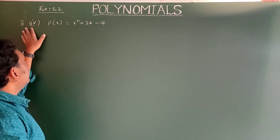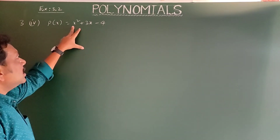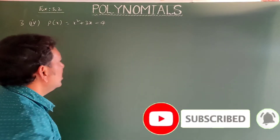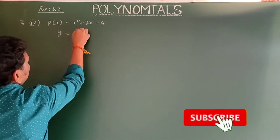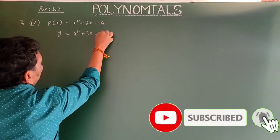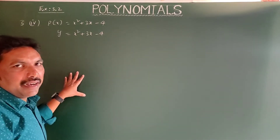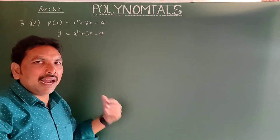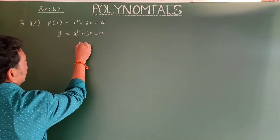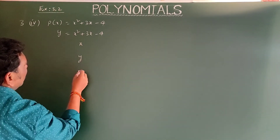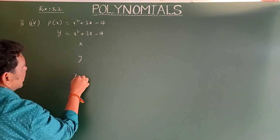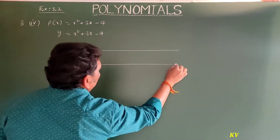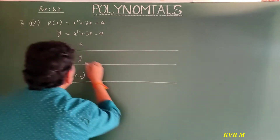Now the fourth graph in question 3: p(x) = x² + 3x - 4. Let us take y = x² + 3x - 4. First I'll find the ordered pairs, then draw the graph on the graph sheet. Take x value, y value, and (x, y).